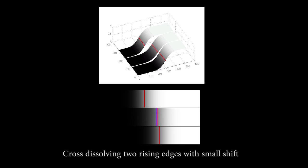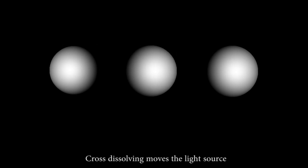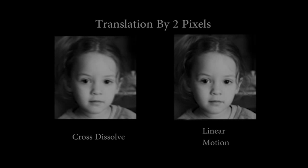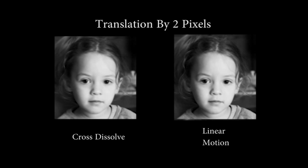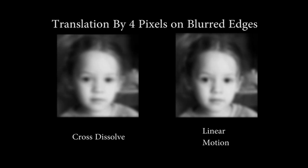Similar effects are observed with non-periodic edges and small edge rotation. The cross dissolve also produces physical motions of light sources. These effects can be observed by translating a real image. The cross dissolve, shown on the left, matches a real image shift, shown on the right, for small motions, but breaks down for larger motions. Blurring the image restores the translation effect, since low frequency edges can travel larger distances.